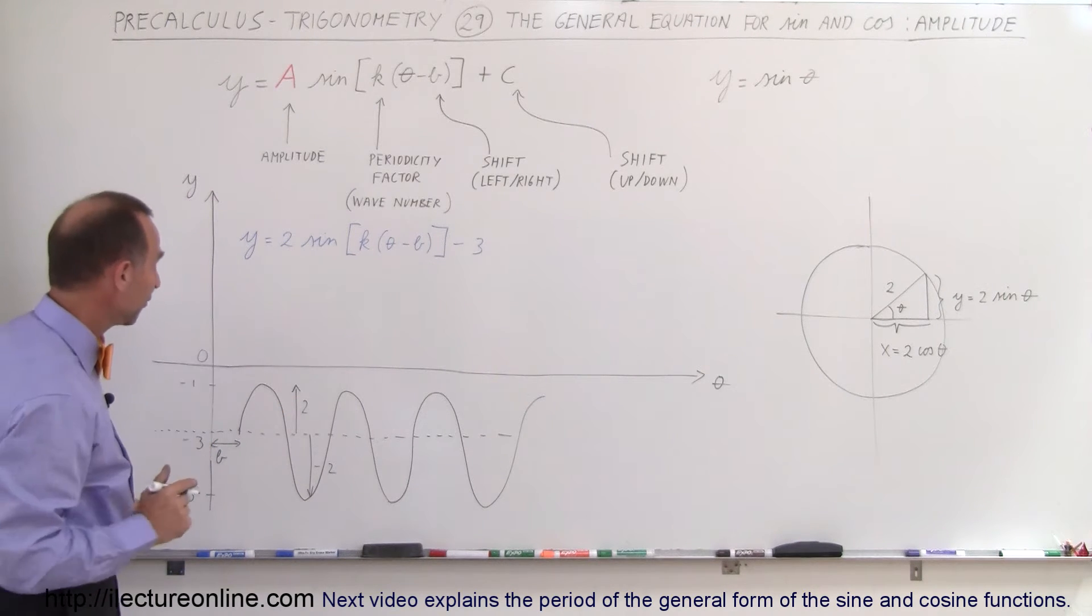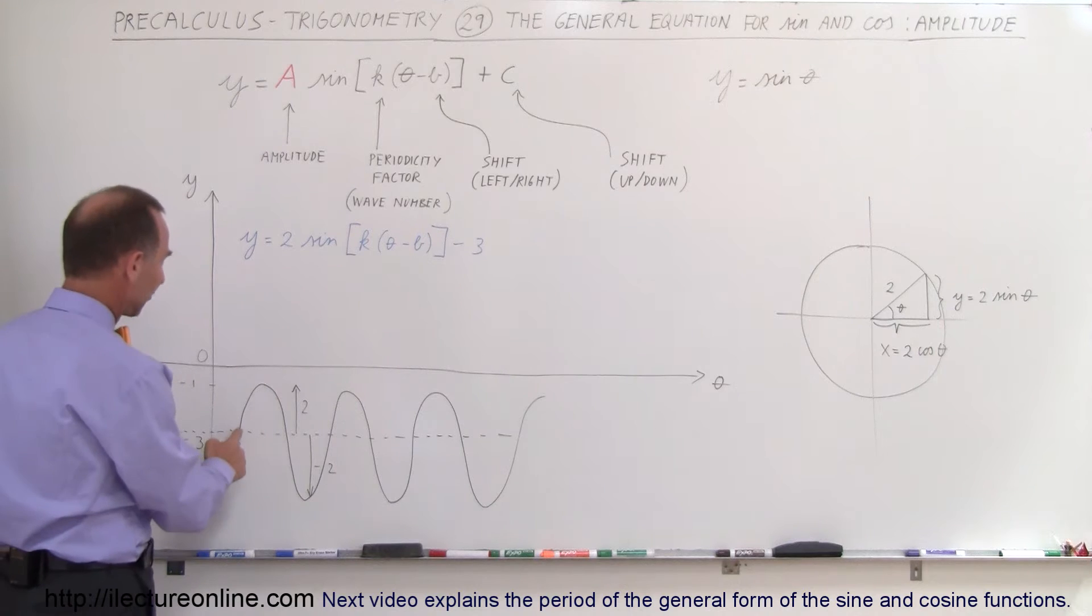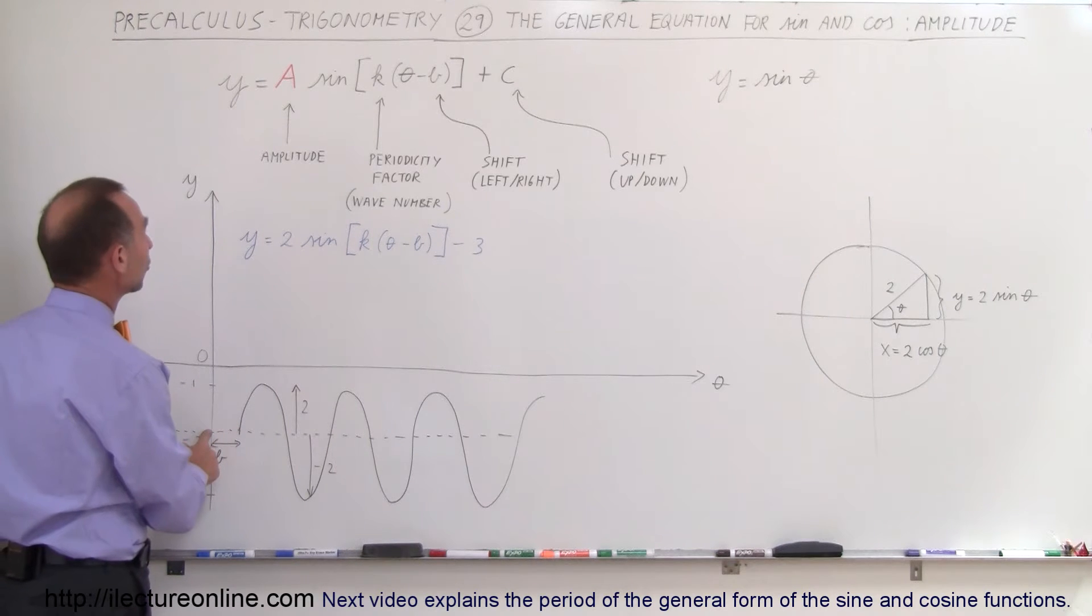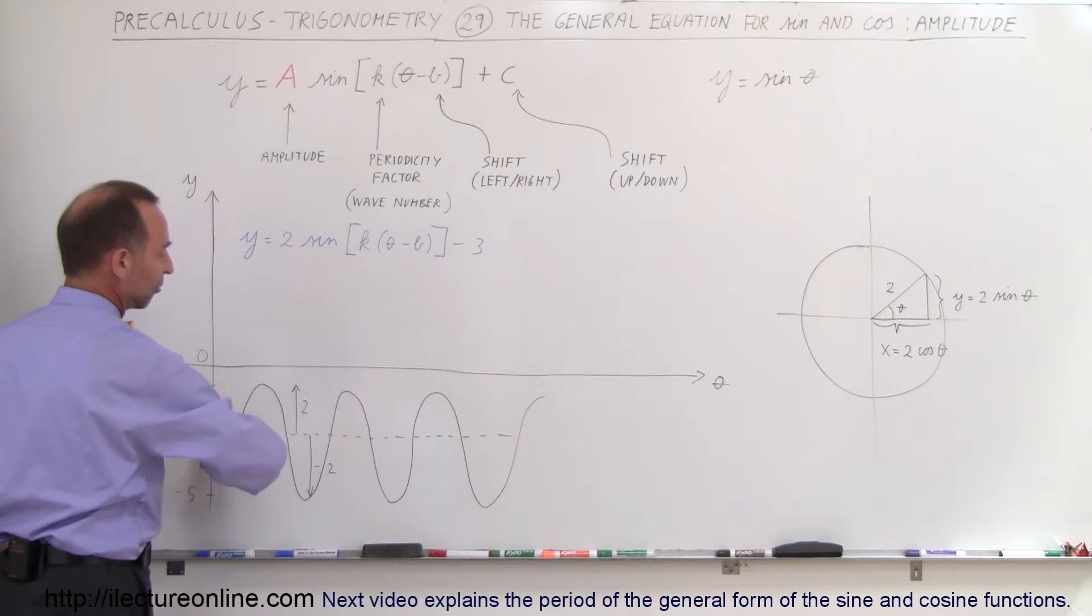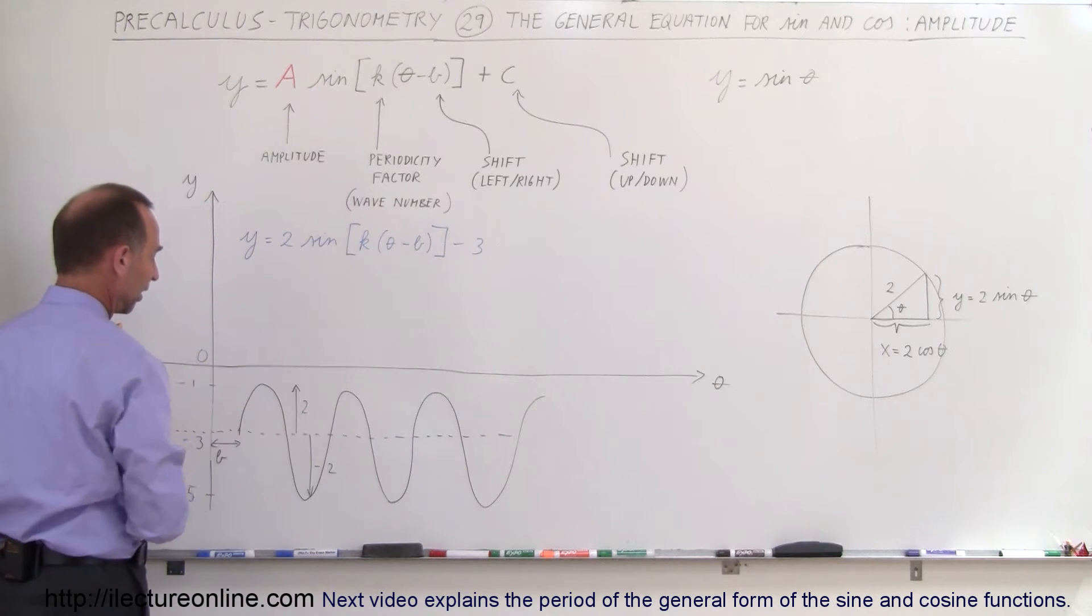And so now we graph the sine function. Notice that normally the sine function equals 0 at the origin, but in this case, the function is being shifted by distance b to the right. When it's negative, it shifts to the right. When it's positive, it shifts to the left.